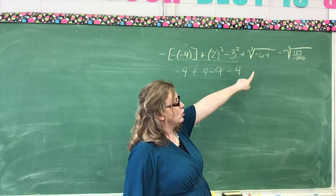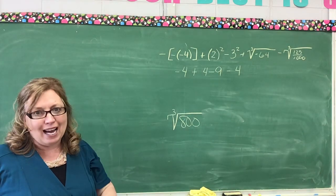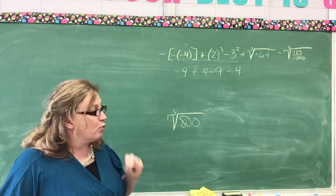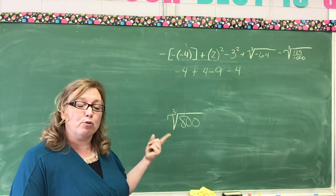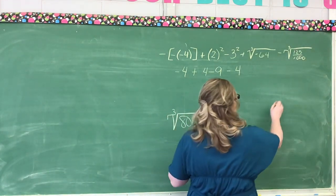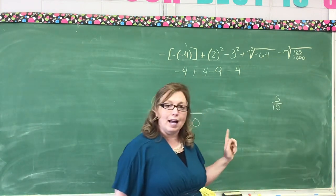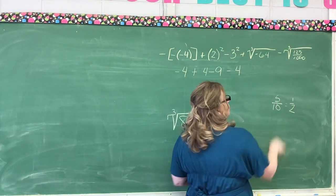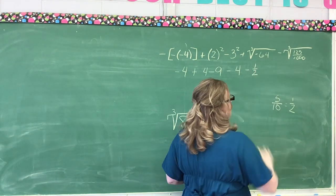Now, we're going to have the third root of 125/1000. So we have to find the third root of 125 and the third root of 1000. The third root of 125 is 5. The third root of 1000 is 10. But what can I do to 5/10? Well, I can reduce it to 1/2. Now, because this is already a positive number, we're going to put minus 1/2.